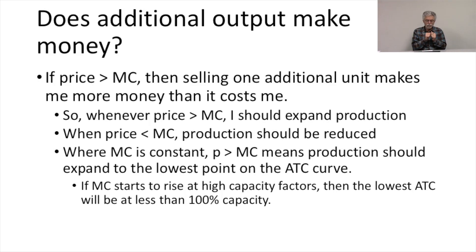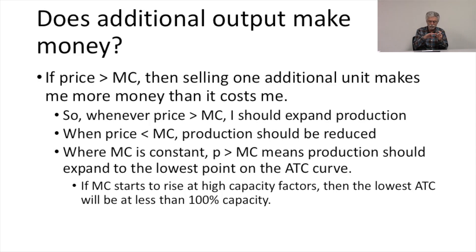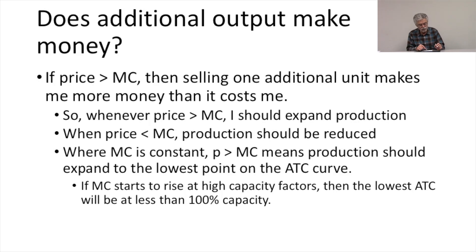Where marginal cost is constant and the price is greater than the marginal cost, you would keep running the plant out to as far as you can — up to full capacity. But if marginal cost starts to rise at high capacity factors, then you would choose to run at less than 100% capacity.